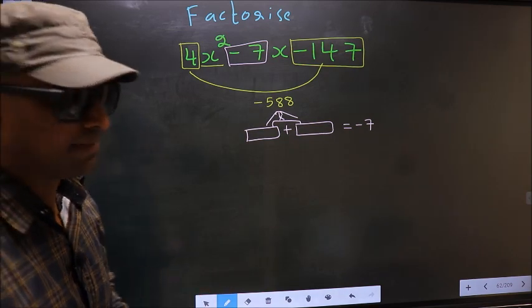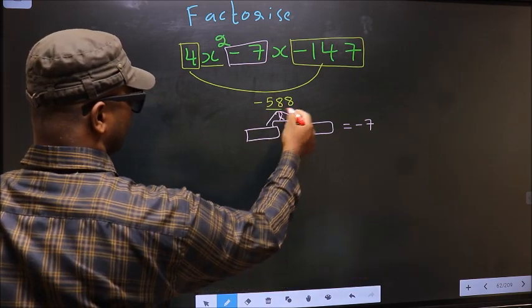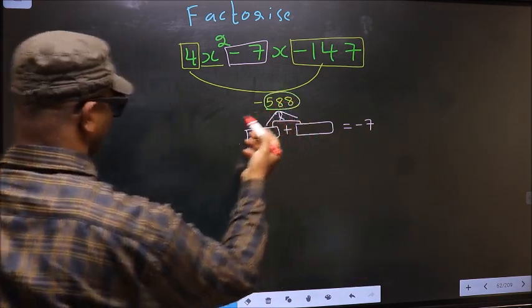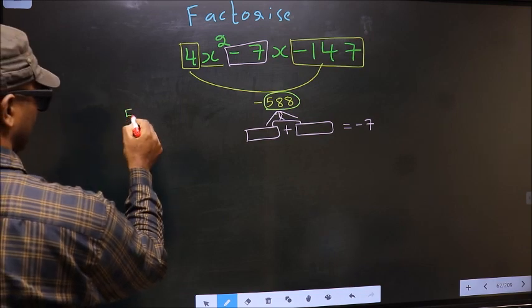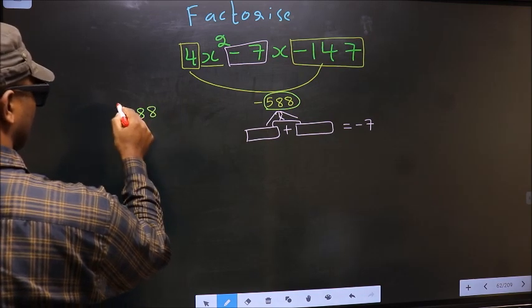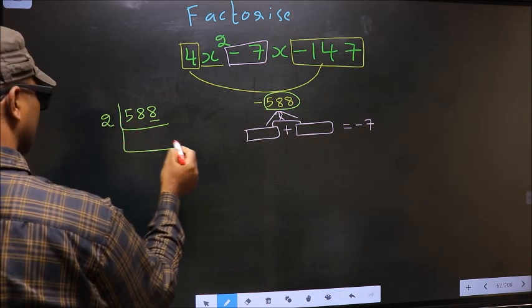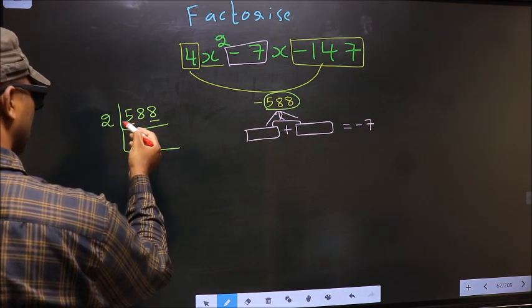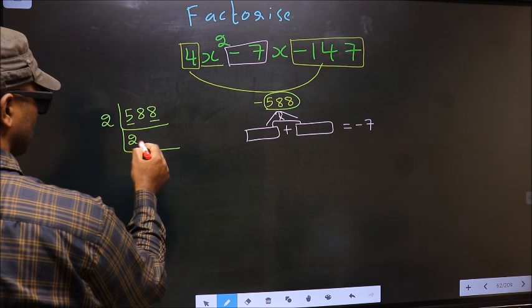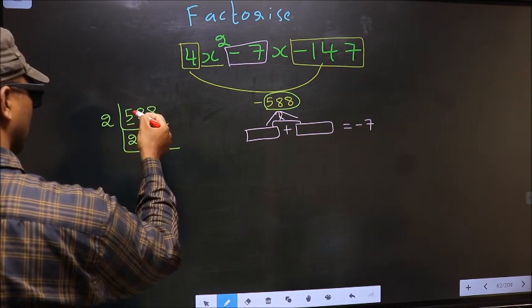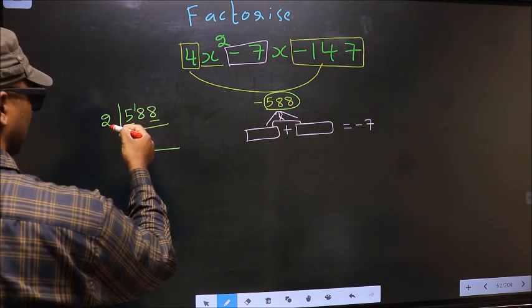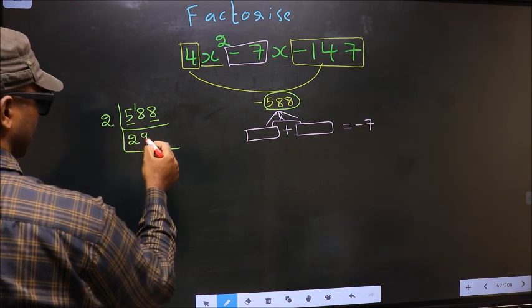To get those two numbers, we should take the LCM of 588. The last digit is 8, even, so take 2. The first number 5, a number close to 5 in the 2 table is 2×2 = 4. 5 - 4 = 1, 1 carried forward making it 18. When do we get 18 in the 2 table? 2×9 = 18.